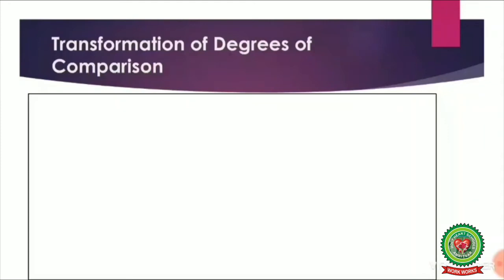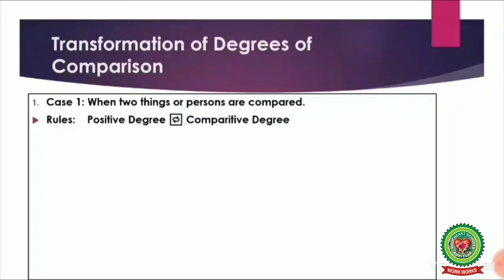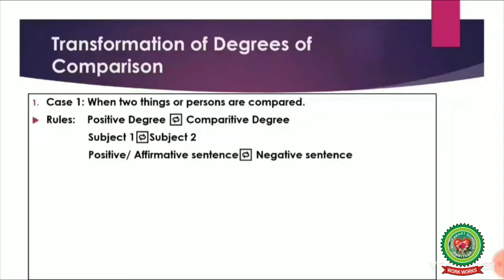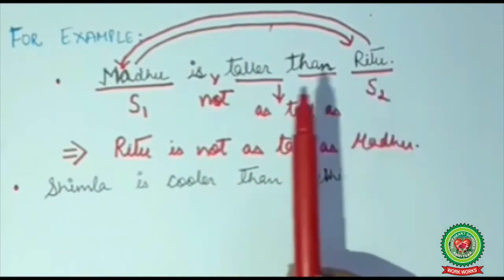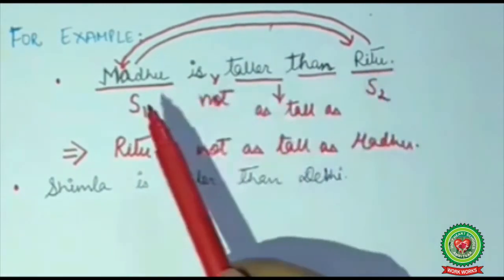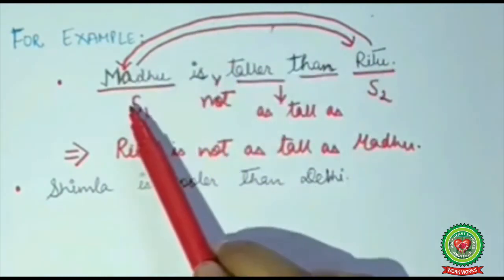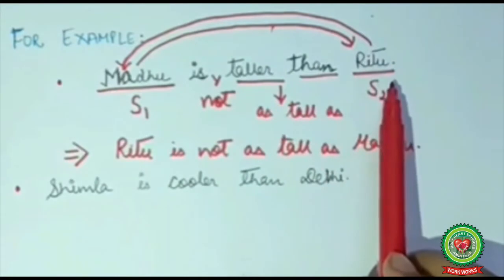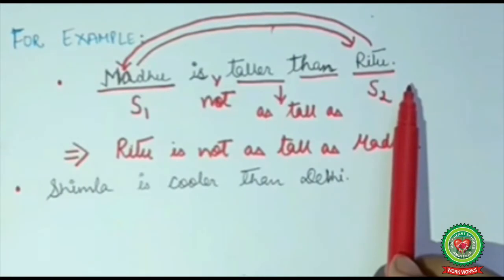Now, transformation of degrees of comparison. There are broadly three situations. First, when two things or persons are compared. The rules are: positive degree will change into comparative degree and vice versa; subject one will come in place of subject two and subject two in place of subject one; and an affirmative sentence will change into a negative sentence and vice versa. For example: 'Madhu is taller than Ritu' — Madhu is subject one, Ritu is subject two.